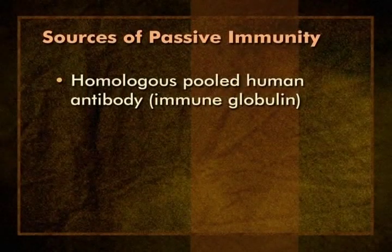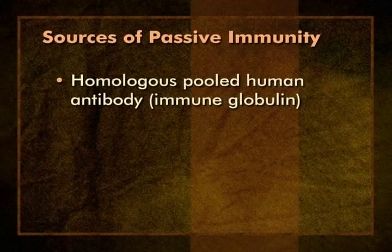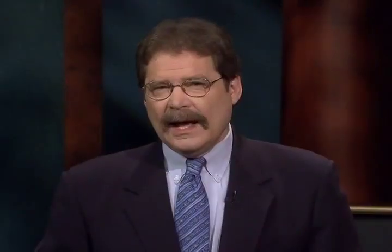Passive immunity is defined as protection in the form of antibody transferred from an exogenous source, usually another person. Transplacental antibody is a very important source. Maternal antibody is actively transported across the placenta in the last six to eight weeks of pregnancy, so a full-term infant is born with the same antibodies that the mother has. If the mother is not immune to a disease, the infant will not be immune and is susceptible to infection from the moment of birth. There are three chief medical sources of passive antibody. The first is homologous pooled human antibody, commonly known as immune globulin. Those little vials of immune globulin contain antibody from the blood of hundreds of American adult donors.